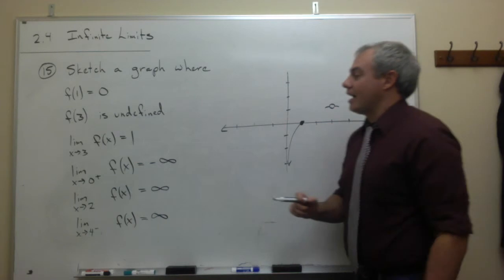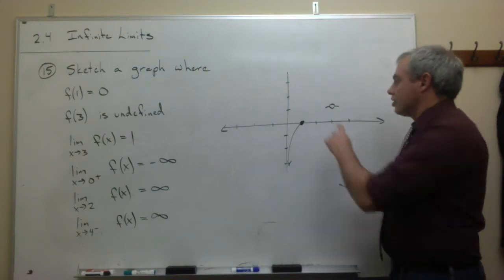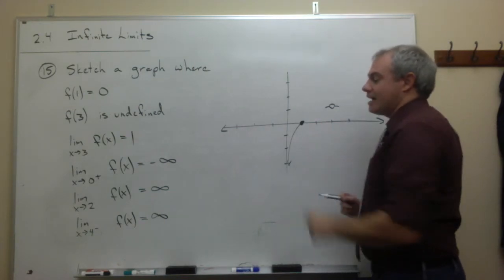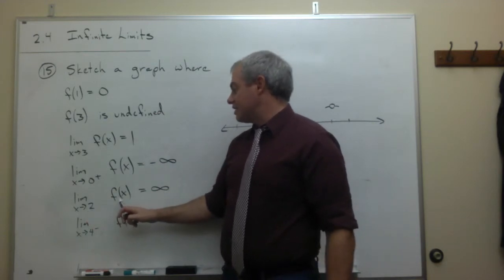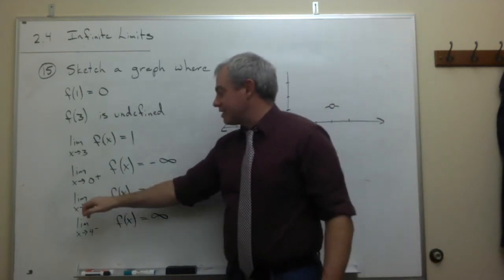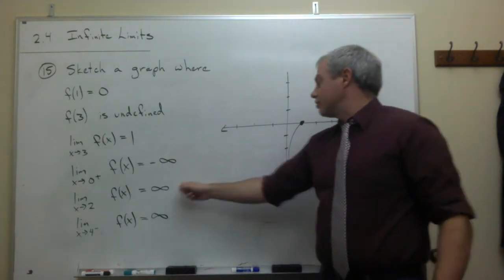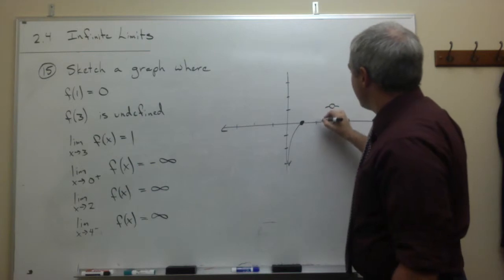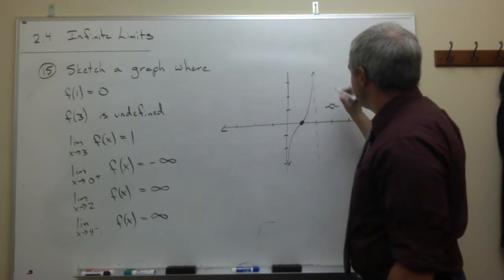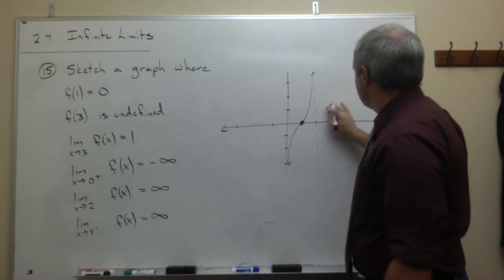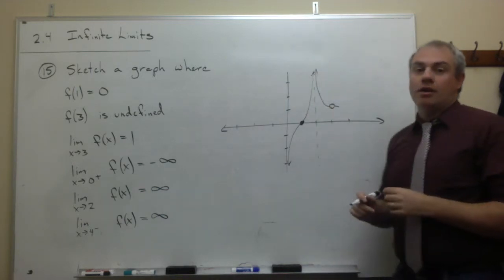Next, the limit as x goes to 2 of f(x) needs to be infinity. So as x gets close to 2, the function needs to go to infinity. Notice this isn't one-sided — both the left side and the right side need to be going to infinity. So at x = 2, I'll draw a vertical asymptote. The left side goes up to infinity and the right side also goes up to infinity.